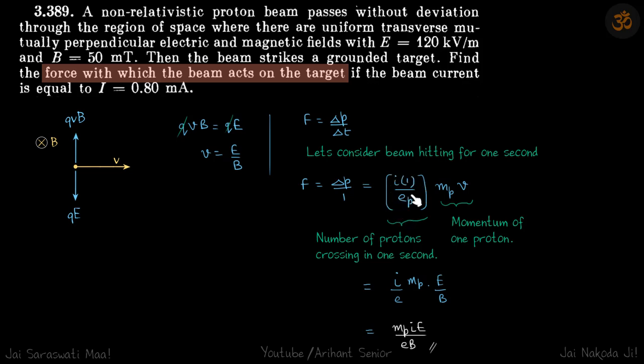How many protons are crossing in one second? I times one is the total charge. I is dq by dt times one, because we're talking about one second. This is the charge of that beam divided by the charge of one proton, which gives us the number of protons that pass a point in one second.